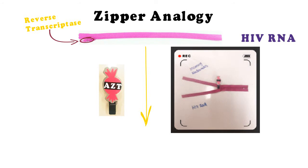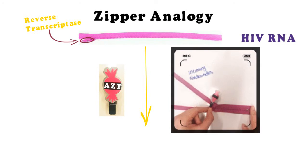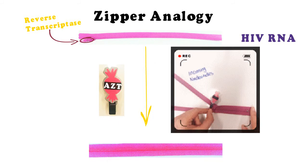Just like our zipper, the addition of AZT stops the addition of more nucleotides and the HIV life cycle is destroyed.